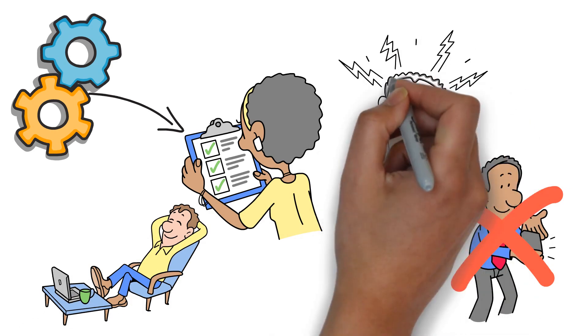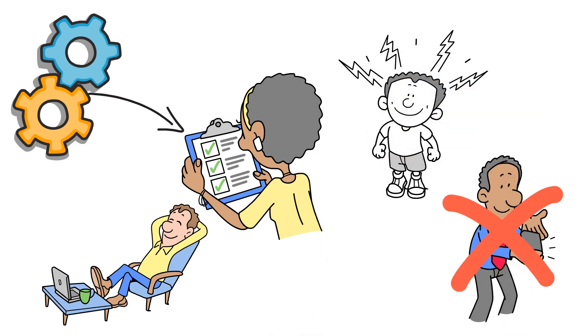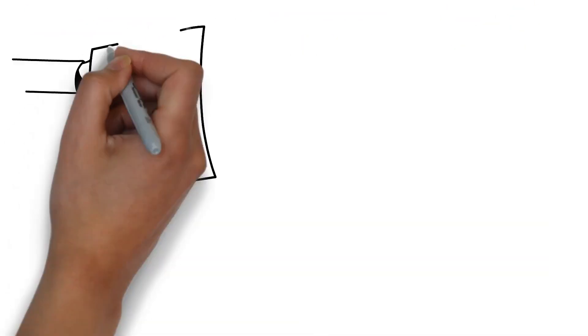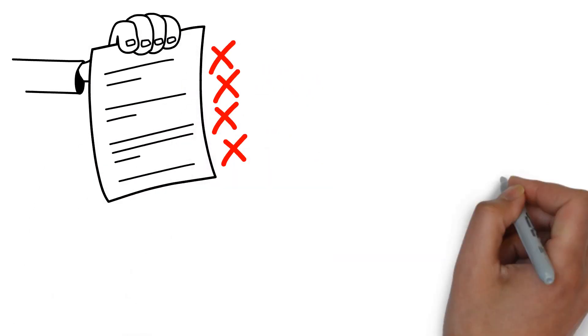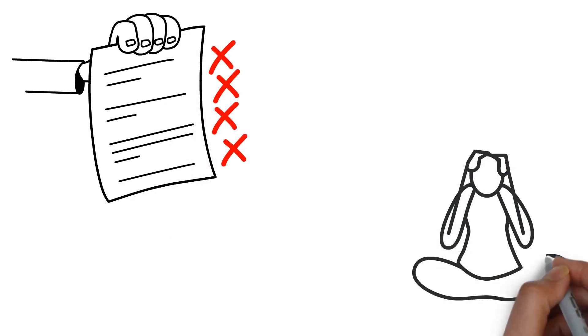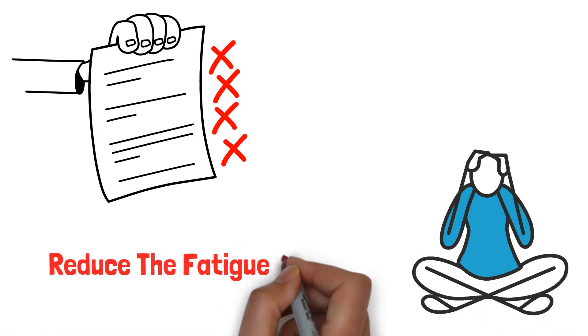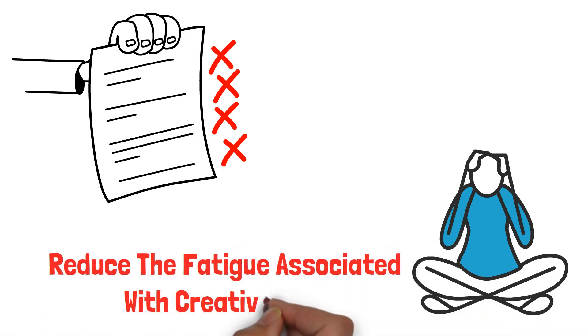This short pause helps your brain to reset, giving you a fresh burst of energy when you start the next Pomodoro. During these breaks, engage in activities that are not mentally taxing. You might meditate, doodle, or engage in a quick physical activity like stretching or walking. These activities help to clear your mind and reduce the fatigue associated with creative work.